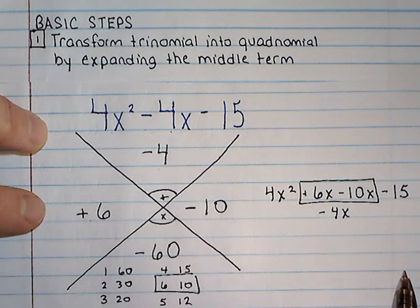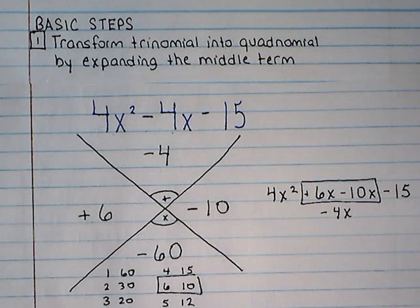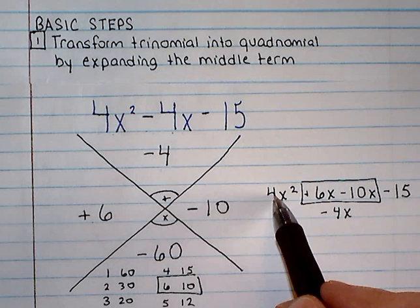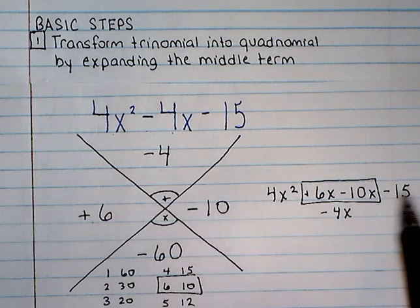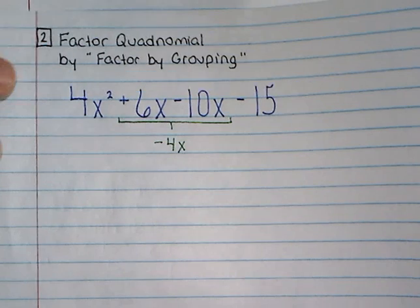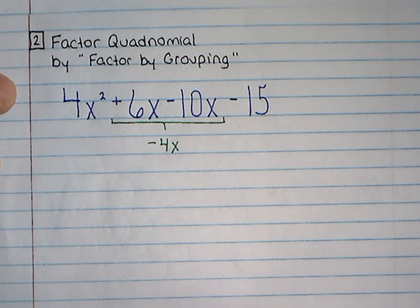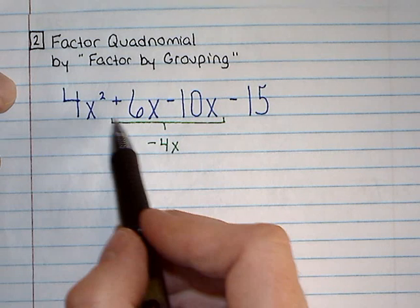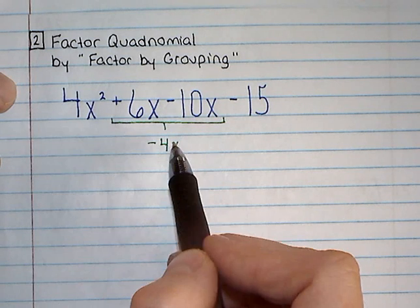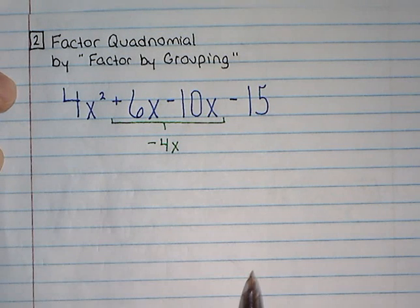What this then allows us to do is to take this formula with its four terms and factor it by the grouping method, the factor by grouping method. And so I've rewritten the problem as we've got it at this point, and I'm simply going to factor by grouping.